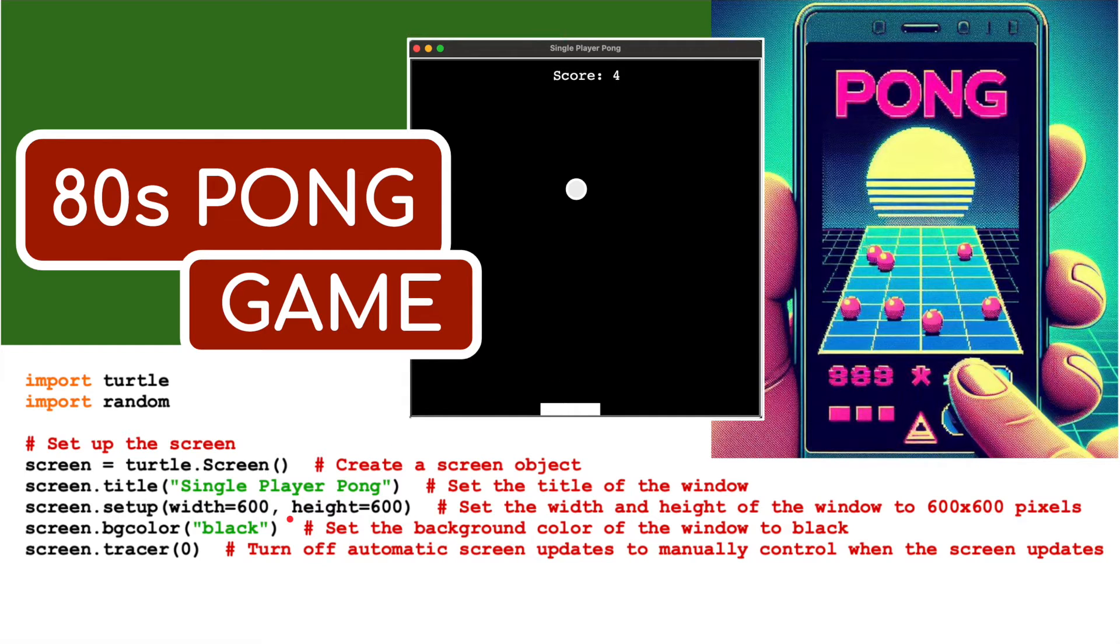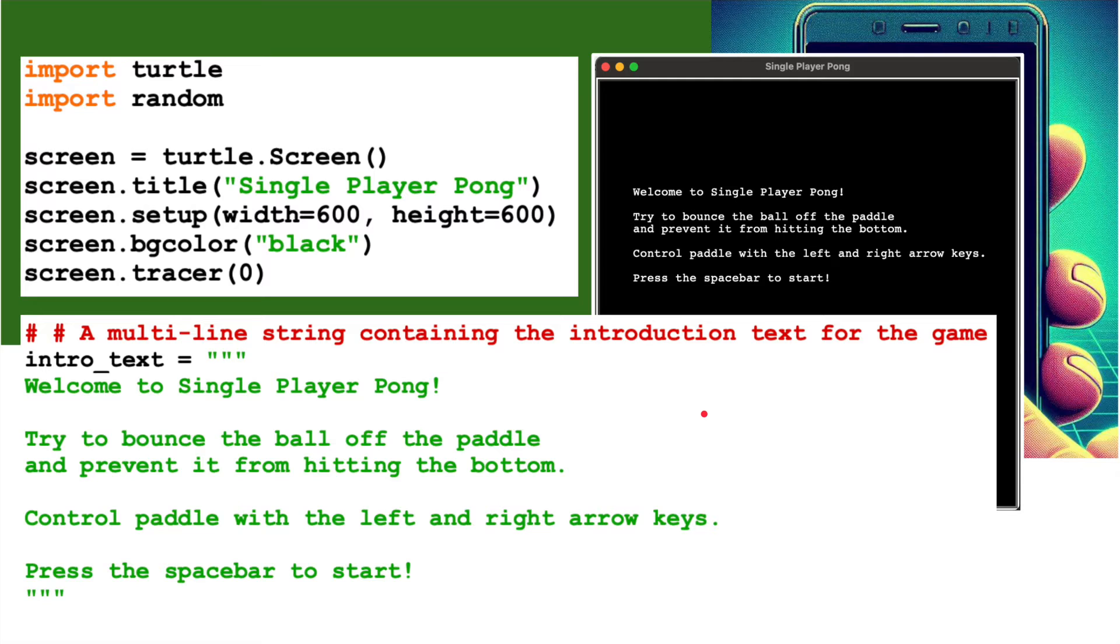We set a size 600 by 600 - a little square screen. The screen background color I've set to black. Then I've put a tracer in here to set that to zero. So I've basically turned the tracer off - the automatic screen updates - to manually control when the screen updates.